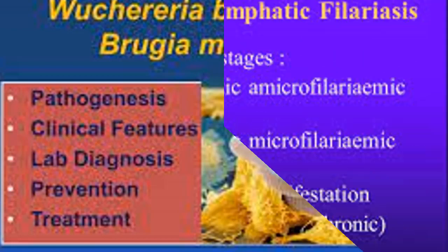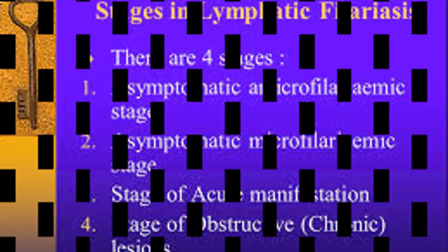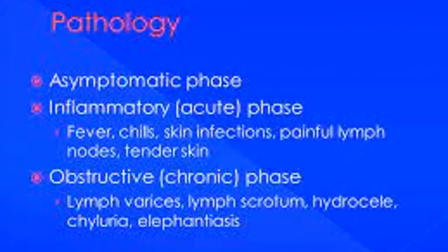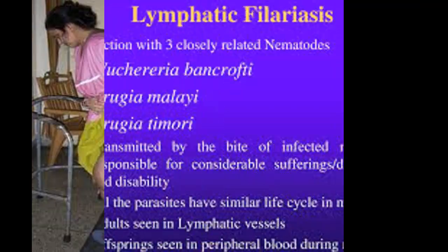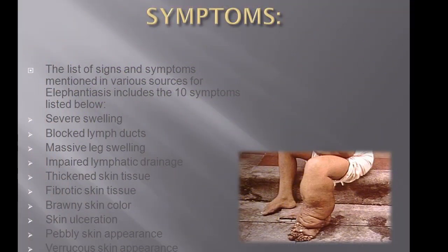In the inflammatory (acute) phase, the antigens from the female adult worms elicit inflammatory responses. The worms in the lymph channels disrupt the flow of the lymph, causing lymphedema. The individual exhibits fever, chills, skin infections, painful lymph nodes, and tender skin of the lymphedematous extremity. These symptoms often lessen after 5 to 7 days. Other symptoms that may occur include orchitis, an inflammation of the testes, which is accompanied by painful immediate enlargement, and epididymitis, inflammation of the spermatic cord.